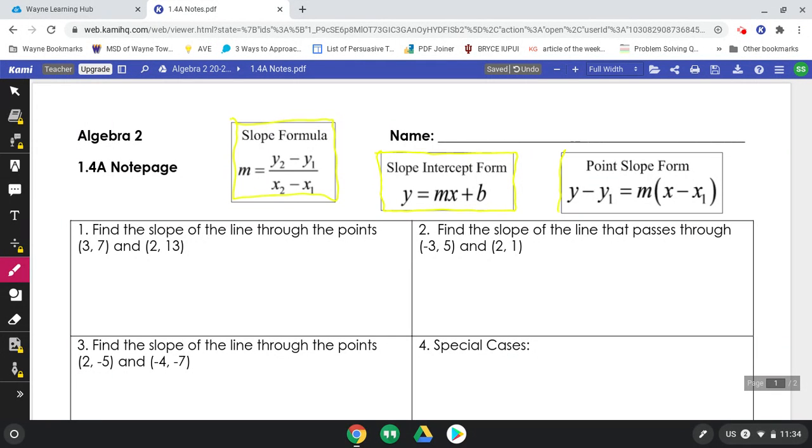And the last one is point slope form, y minus y1 equals m times x minus x1.